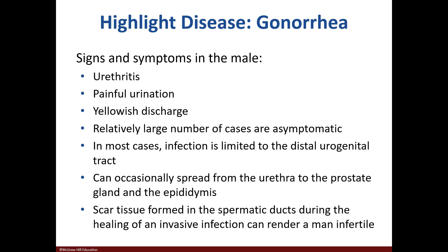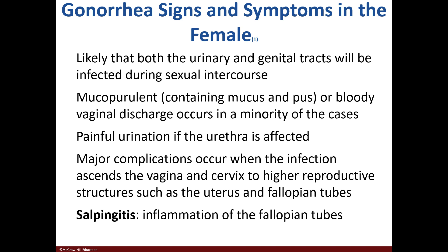With gonorrhea, men may experience symptoms like urethritis, pain when urinating, and a yellow discharge. A large number of individuals experience no symptoms at all, which helps the spread. It can spread to other structures of the reproductive tract and can lead to infertility. Females will typically see both the urinary and genital tract affected, with mucus, pus, or bloody discharge and painful urination.